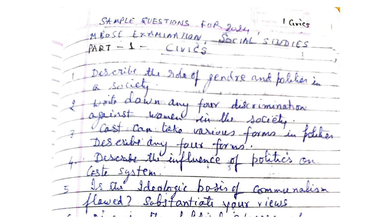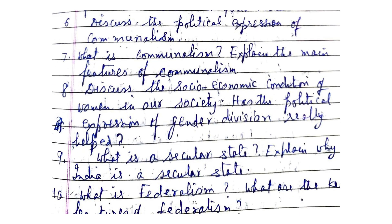Caste can take various forms in politics — describe any four forms. Describe the influence of politics on the caste system. Is ideology the basis of communalism? Substantiate your views. Discuss the political expression of communalism. What is communalism? Explain the main features of communalism. Discuss the social and economic condition of women in our society.